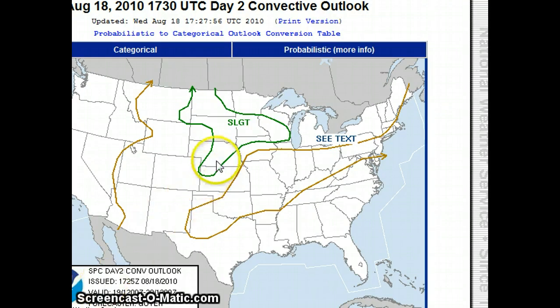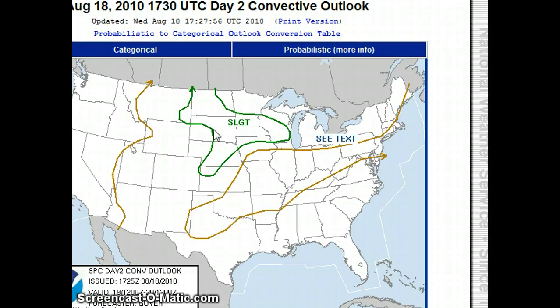You can see here we have Kansas, Nebraska, Minnesota, North Dakota, South Dakota. These are areas that earned a slight risk for severe weather.